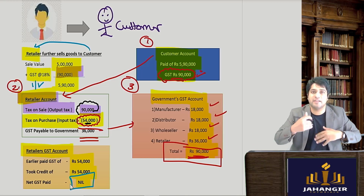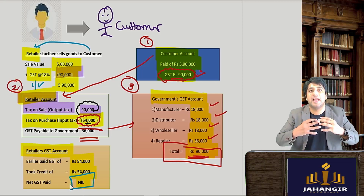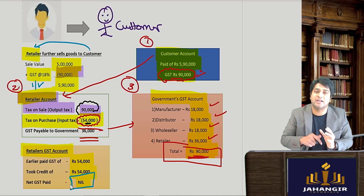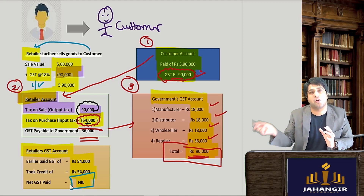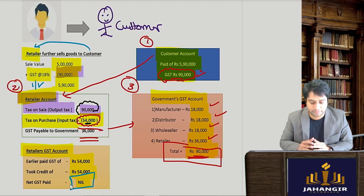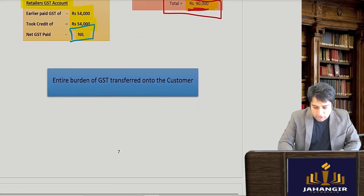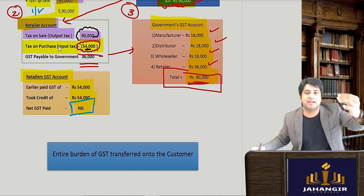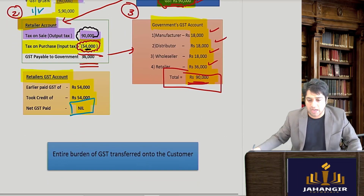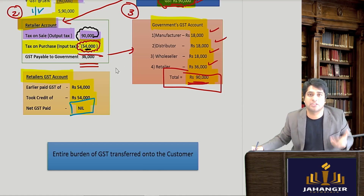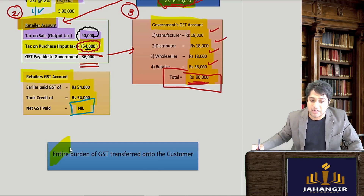In short: every person who is selling collects GST and takes a credit of what he paid earlier on his purchases, and only pays the balance figure to the government. From the entire example, all dealers in between end up paying 0 GST — they pay and take a credit, so net figure is 0 GST paid by them. The ultimate entire burden is on to the customer, who pays the full 90,000.